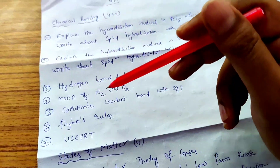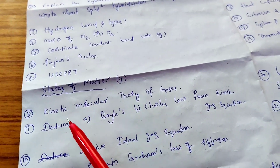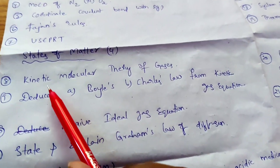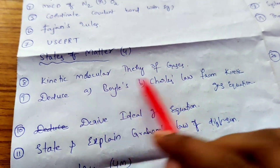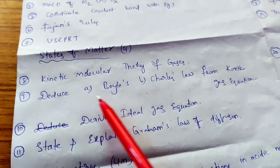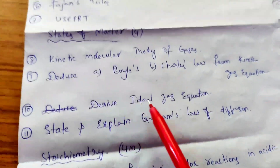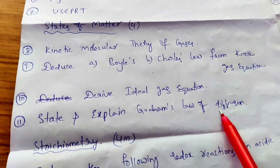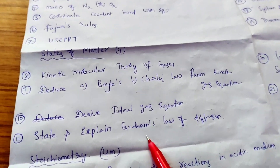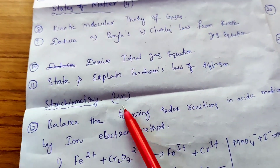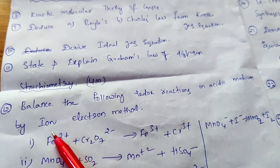From States of Matter chapter, important questions include: Write about the kinetic molecular theory of gases — very important. Deduce Boyle's Law and Charles' Law from the kinetic gas equation. Derive the ideal gas equation. State and explain Graham's Law of diffusion. Also: Balance the following redox reaction in acidic medium by the ion-electron method — this is a very important question.